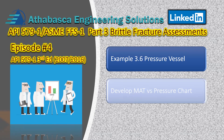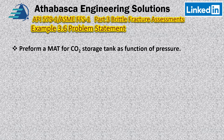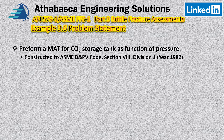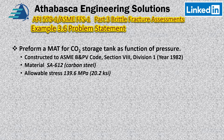In this particular example we're going to perform a MAT analysis for a carbon dioxide storage tank as a function of pressure. This unit was constructed to the ASME Boiler and Pressure Vessel Code Section 8, Division 1, back in 1982, so the old rules apply. The material is SA 612, which is a grade of carbon steel, and the allowable stress is 139.6 MPa (20.2 ksi). This information comes from Section 2D of the Boiler and Pressure Vessel Code.